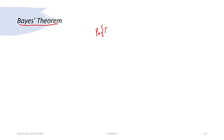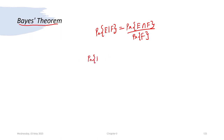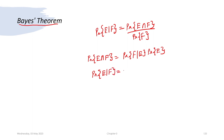Bayes theorem in its compact form: we know that the probability of E intersection F equals probability of F given E times probability of E. And hence, probability of F given E equals probability of F given E times probability of E.